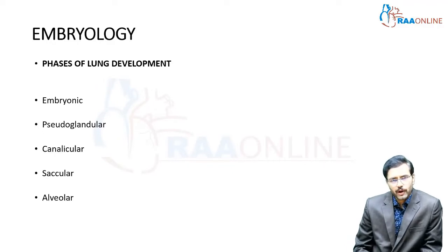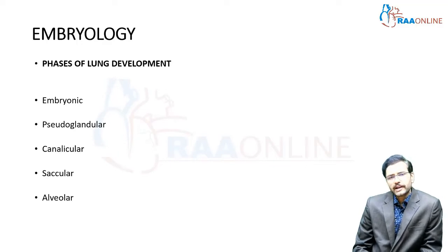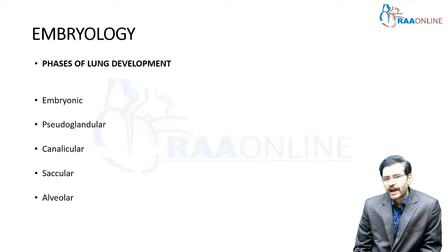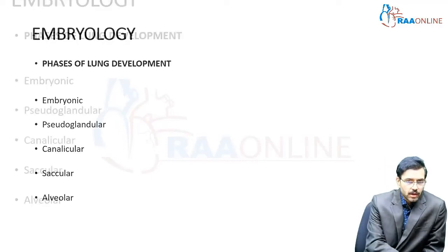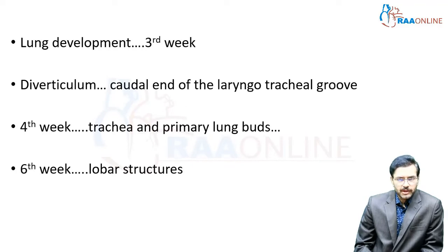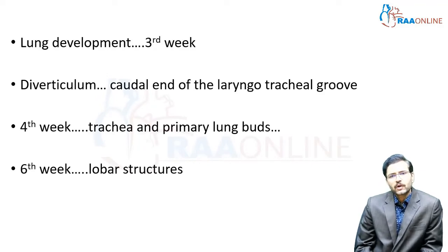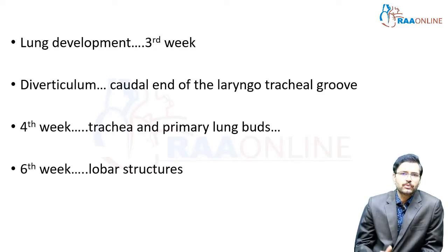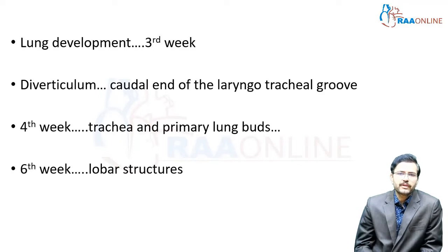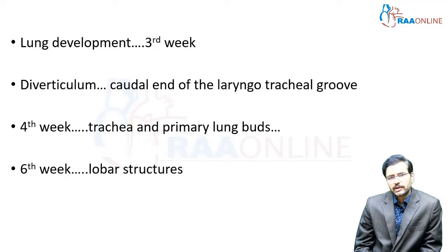The first phase is called the embryonic phase. The second is the pseudoglandular phase. Third is the canalicular phase. Fourth is the saccular phase. And the fifth and last phase is called the alveolar phase. Lung development starts by around the third week — that is how the embryonic phase begins. It is formed as a diverticulum at the caudal end of the laryngotracheal groove, which is formed from the ventral aspect of the developing foregut. By around the fourth week, a trachea develops and primary lung buds develop.